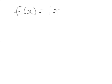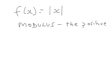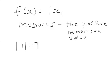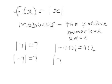Now we're going to look at a new sort of function: the modulus function. So f(x) is the modulus of x, and this simply means it's the positive numerical value. The modulus of 7 is 7, the modulus of minus 7 is 7, the modulus of minus 412 is just 412, and the modulus of 7206 is just 7206.